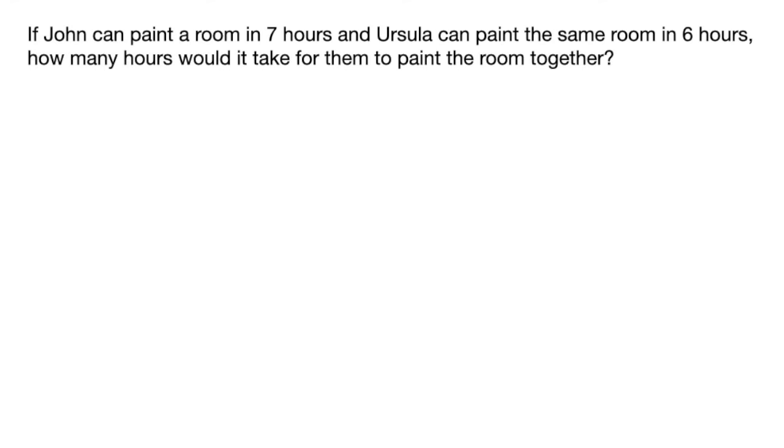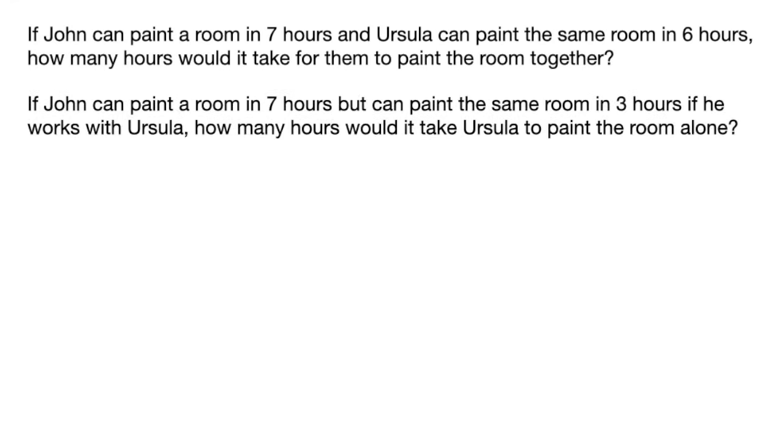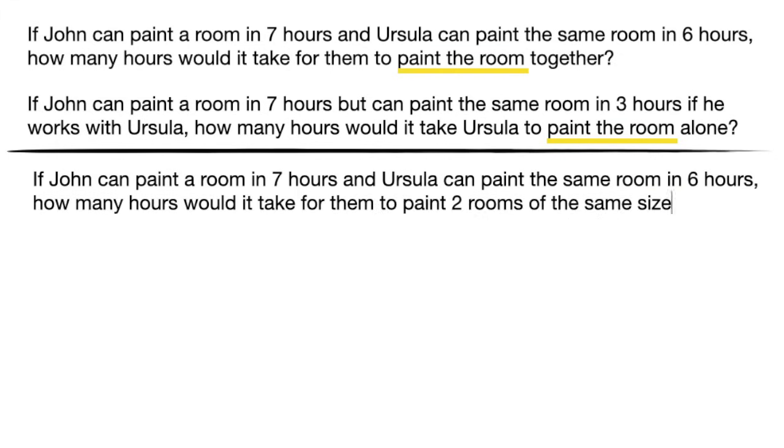Finally, one last difference that you might see in these types of problems. In the previous two problems, they were painting one room together, so we set the equation equal to 1. Well, if you ever see a word problem where they give you the amount of time it takes for the first person to paint a room and the second person to paint a room, and then they ask you how much time it would take them to paint two or more rooms together, simply use the same formula, but instead of setting it equal to 1, you would set it equal to 2, or the number of rooms that they specify in the question.